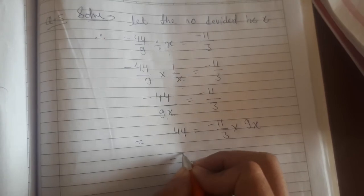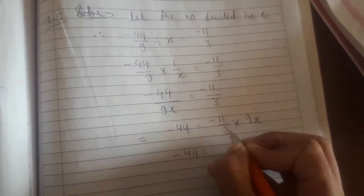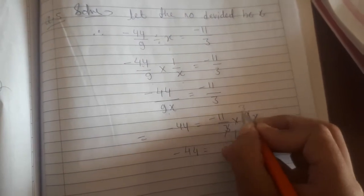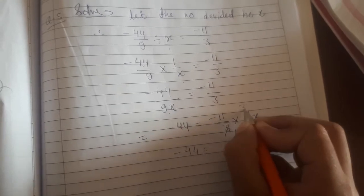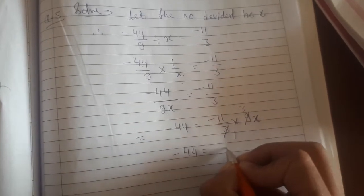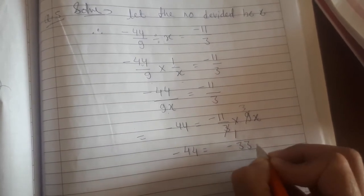Next, -44 equals 9 by 3. -11 into 9x, that gives -11 by 3 is 33x.